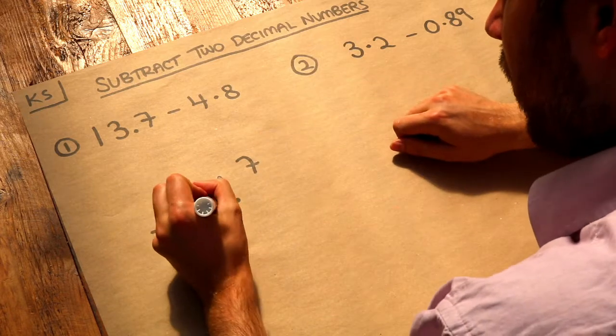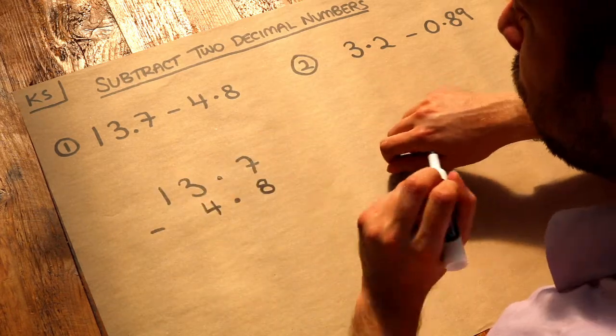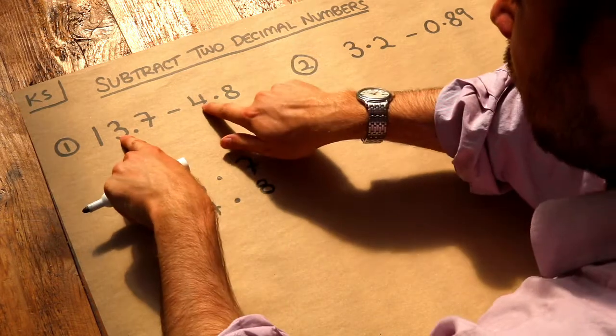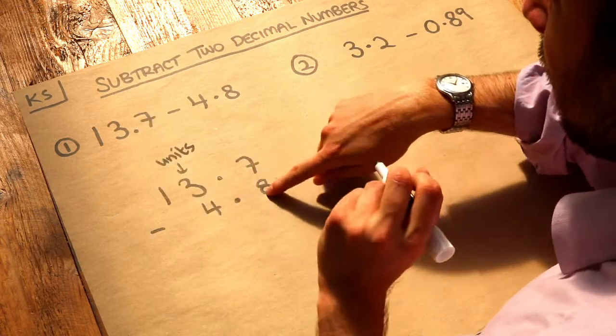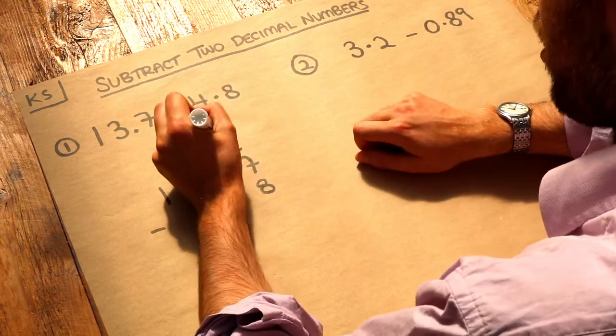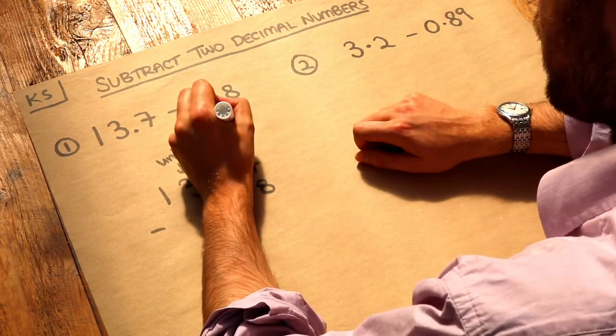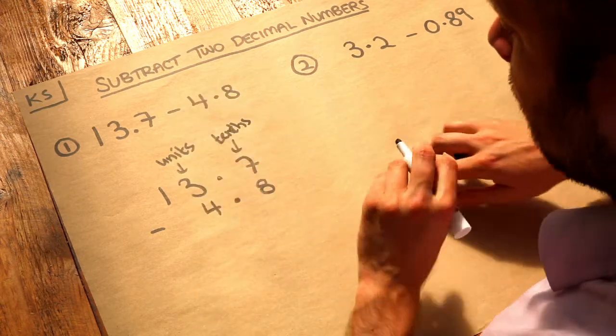Now I can put the 4 here and the 8 here, and that ensures that both the 3 and the 4 are the units digits, and the 7 and the 8 will both be the tenths digits. Just make sure that everything's lined up by making sure the decimal points are lined up.